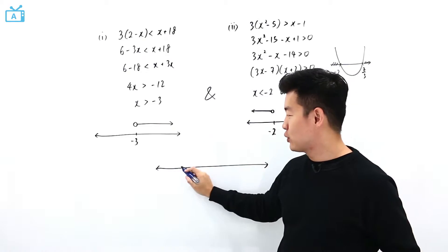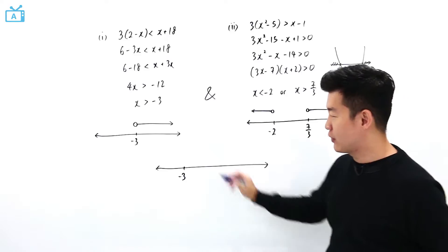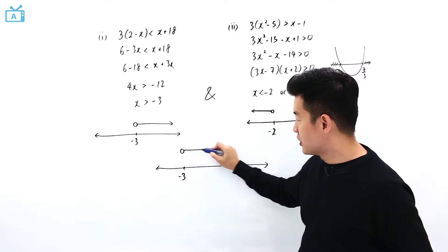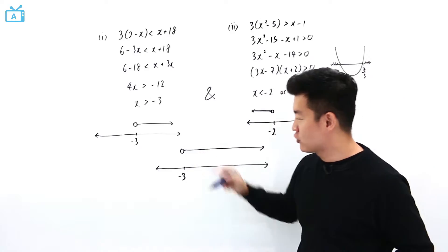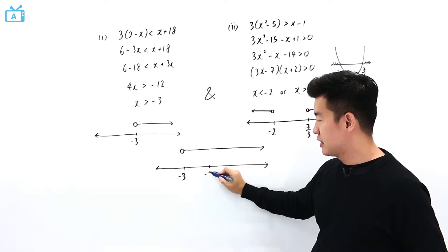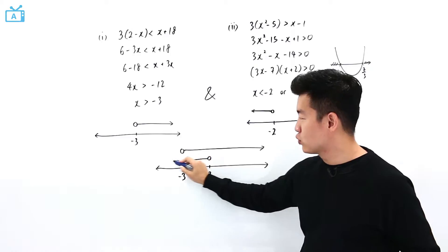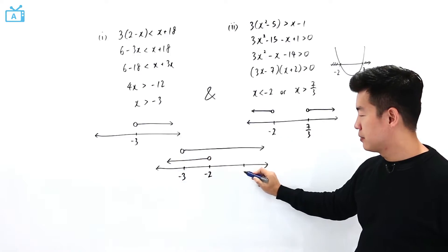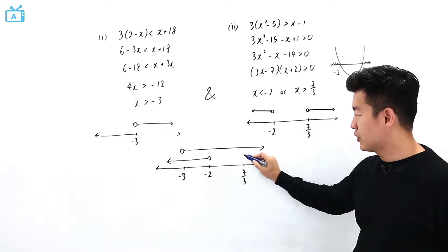For this set of solution here, it is only with reference to minus 3. And it is going to be on the right-hand side of minus 3 but strictly bigger than minus 3. And for this, it is going to be less than minus 2 or bigger than 7 over 3.